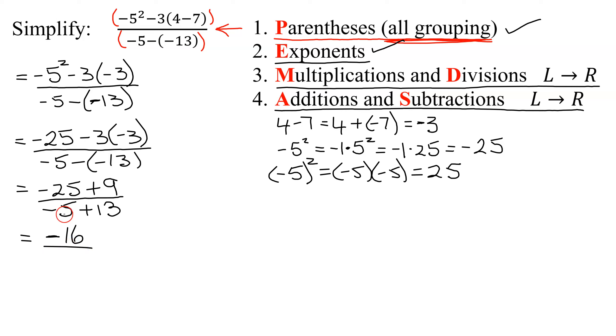In the denominator, again, I have opposite signs. You take the sign of the larger one, so my denominator is going to be positive. And 13 minus 5 is 8.